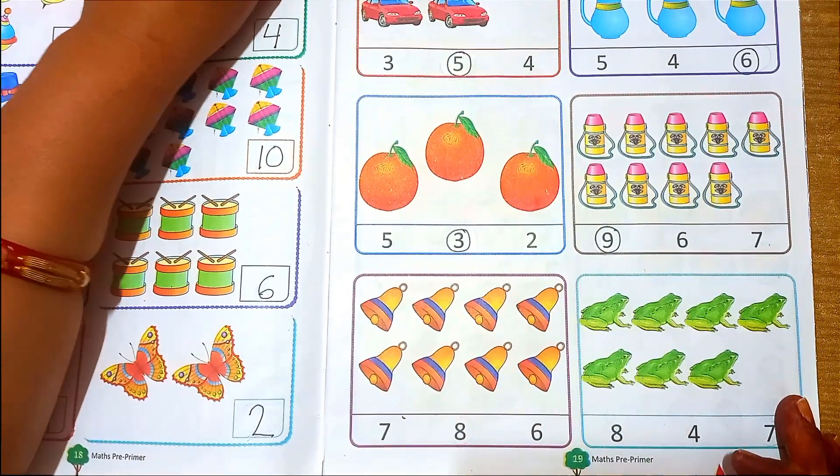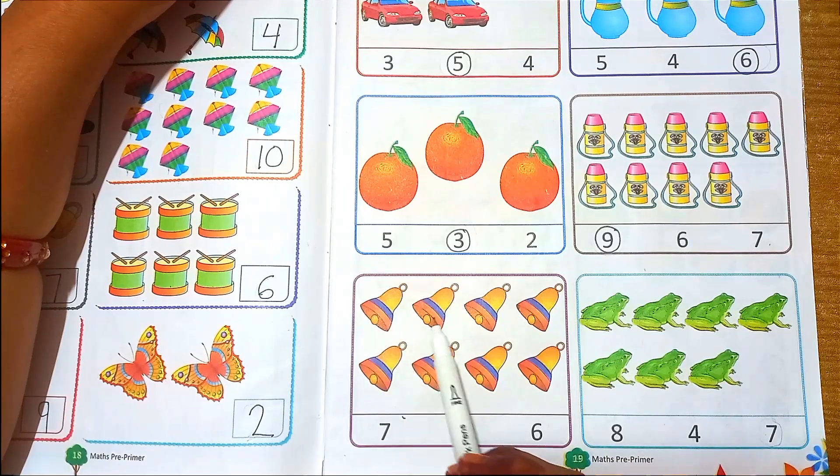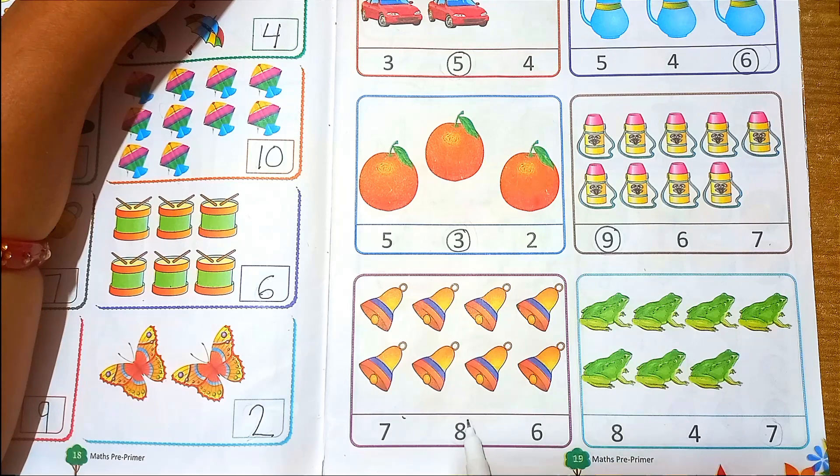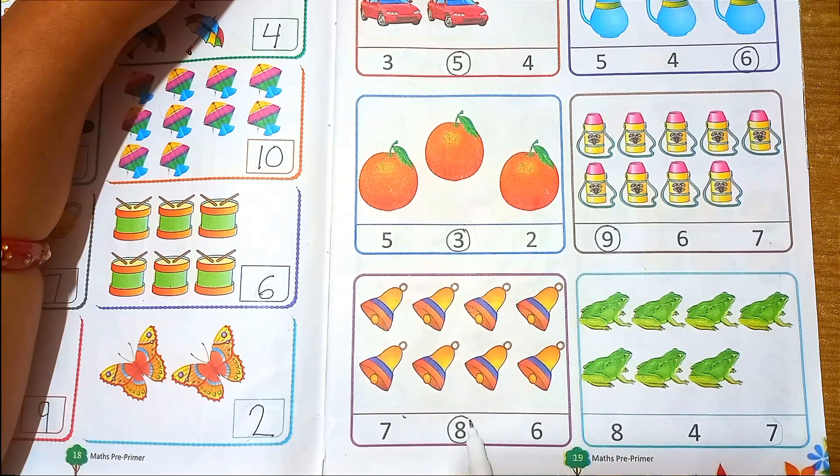Next. One, two, three, four, five, six, seven, eight. Eight bells. Eight circle.